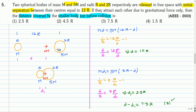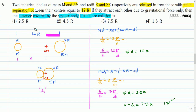Initially m and 5m are at a distance of 12r. When they collide, they will touch each other. Since there is no external force acting on the system, the center of mass position will not change. Initially, let the center of mass be at distance d from the small mass m. Using the definition of center of mass, the moments about the center of mass must be equal: m × d = 5m × (12r − d). From this, we get d = 10r.